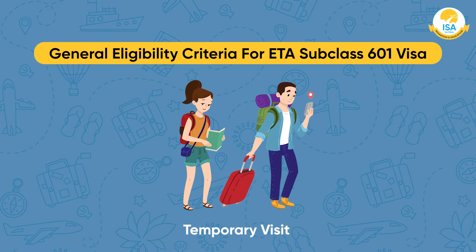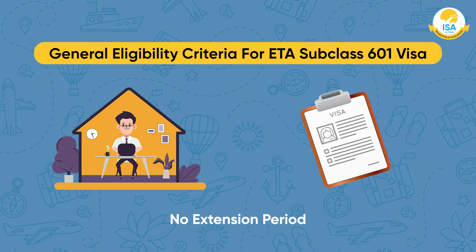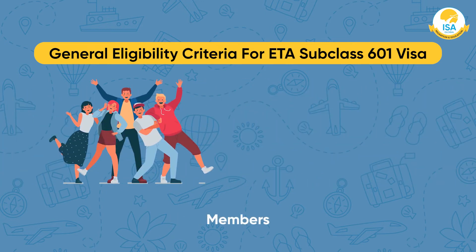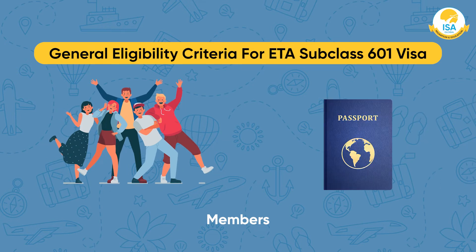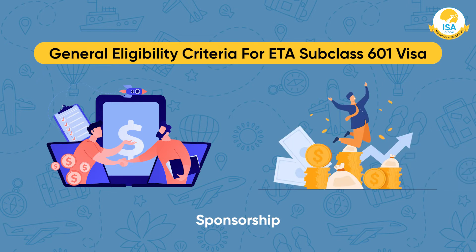You must be a temporary visitor traveling to the nation for less than three months and will abide by the country's laws. There is no extension period — if you want to stay longer once the visa expires, you need to apply for another visa. You need to provide details regarding the number of members traveling with you, and everybody should have their passport. You also need sponsorship or enough finances for the vacation period.